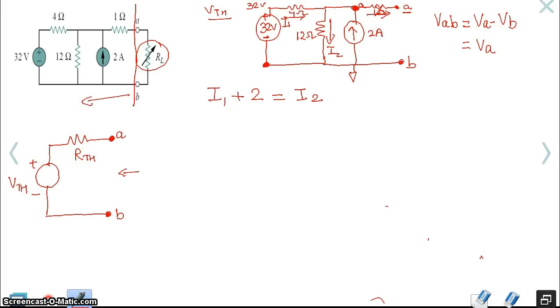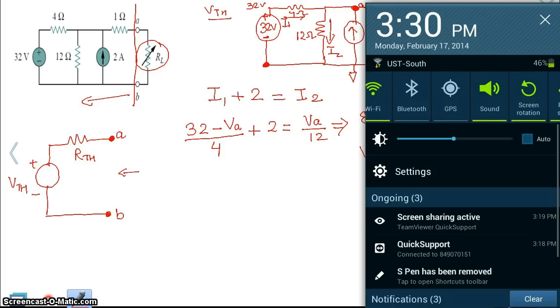I1 is equal to 32 volts minus voltage at node A, divided by the 4 ohm resistor, plus 2 equals I2. I2 is VA minus 0, divided by 12. Now, what we can do is basically simplify this. That will group all A's on one side. So 32 divided by 4 is 8, plus 2. And on the right-hand side, I have VA, 1 over 12, plus 1 over 4. So if I simplify all of this, I get VA is equal to 30 volts.